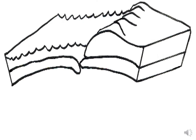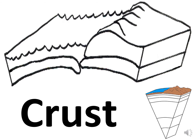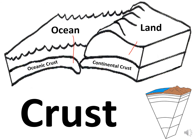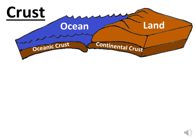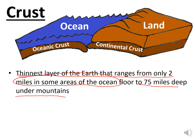Let's start with the crust. Draw these pictures as you take notes. We have oceanic crust and continental crust. The crust is the thinnest layer of the earth, ranging from only two miles on the ocean floor to 75 miles deep under the mountains.